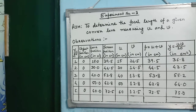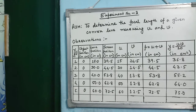Now you have to tabulate the observations. Write down the aim: to determine the focal length of a given convex lens by varying u and v. The object position was always kept at zero. Lens positions are 15, 20, 30, 40, 50, 60. Screen positions where the image was obtained: 39.5, 44.5, 53.8, 62.8, 72.5.